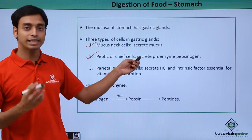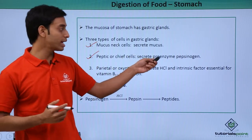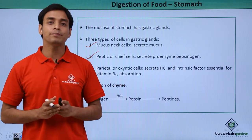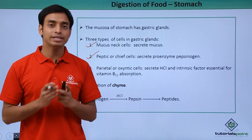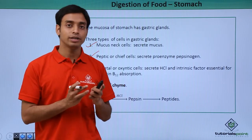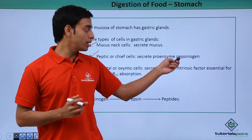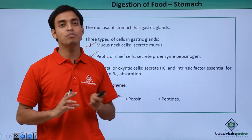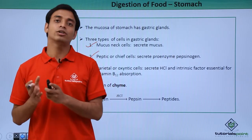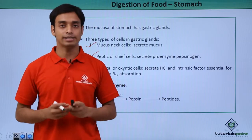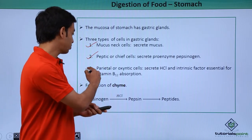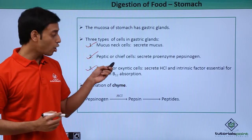The second type of cell is known as the peptic or the chief cells. These cells secrete a pro-enzyme called pepsinogen. A pro-enzyme means it is a form of an enzyme which is not active. This pro-enzyme pepsinogen needs some modifications before it can become an active enzyme.